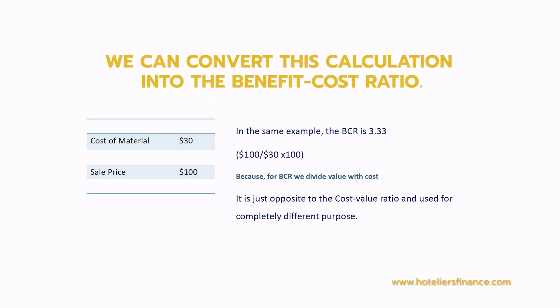Now let's jump to BCR — benefit cost ratio — which is the opposite of the cost value ratio. Instead of cost divided by value, we divide value by cost. Using the same example: cost of material is $30, sale price is $100, so the BCR is 100 divided by 30, which equals 3.33. This means each dollar invested generates $3.33 — so if you invest $10 you get $33. BCR gives an indication of the maximum sale that can be generated by inputting a certain cost.